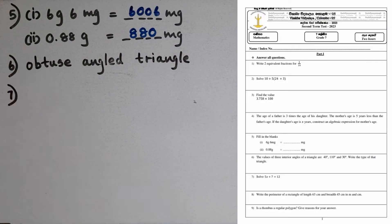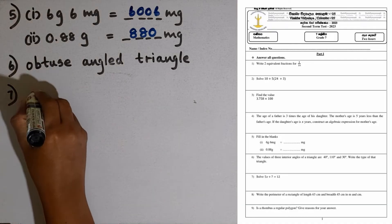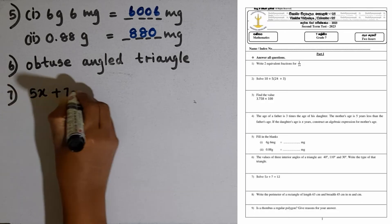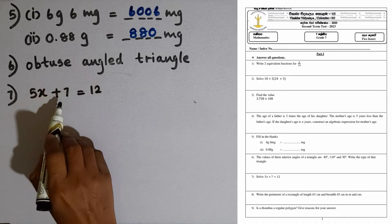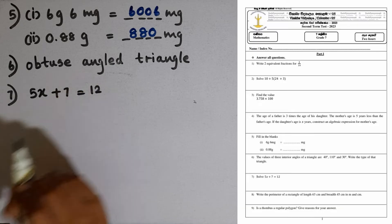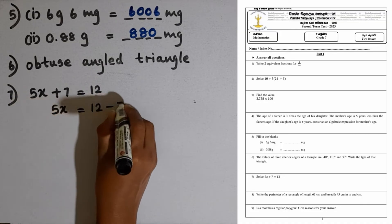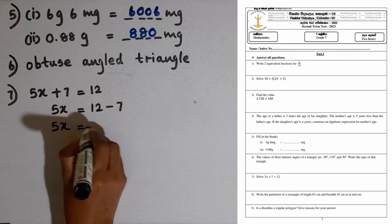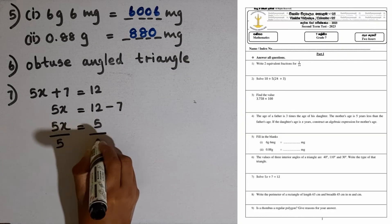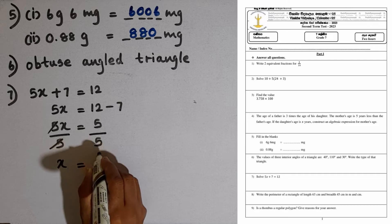Question number 7. We are given to solve this simple equation: 5x plus 7 equals 12. We have to remove the plus 7 first, so we subtract 7 from both sides. Then 5x equals 12 minus 7, so 5x equals 5. Now we can divide both sides by 5. x equals 5 divided by 5, which is 1.